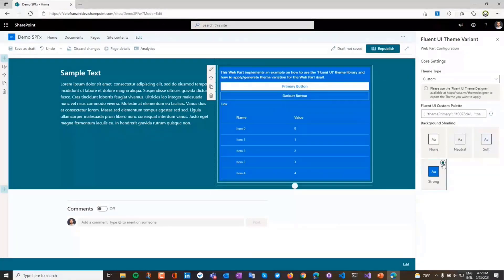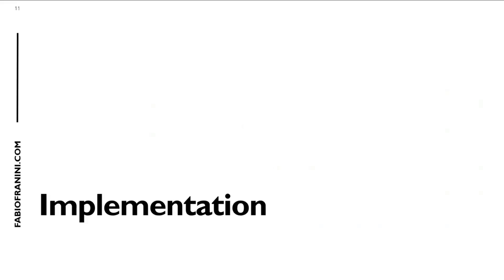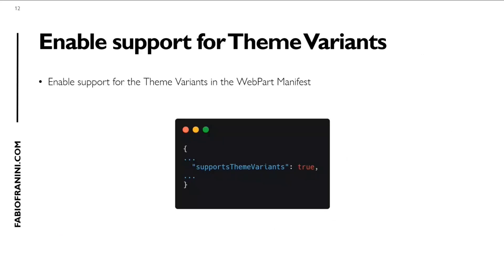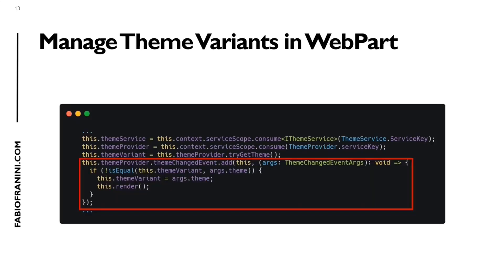You are able to change the variation from this custom theme. The implementation starts with enabling support for theme variants inside the web part manifest. You need to set 'supportsThemeVariants' to true inside the manifest to enable your web part to support theme variants.